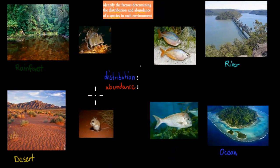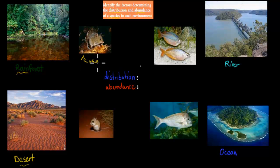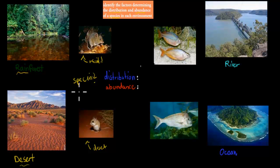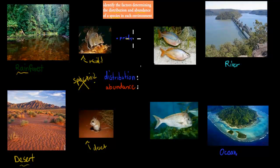Starting with species. Here we have pictures of a rainforest and a desert, and we've got two different mice — this mouse found in a rainforest, and this mouse found in a desert. You might think they look quite similar, and they might be the same species. But the reality is they're not. The definition of a species is that they share many similar features, but they also need to be able to produce fertile offspring.